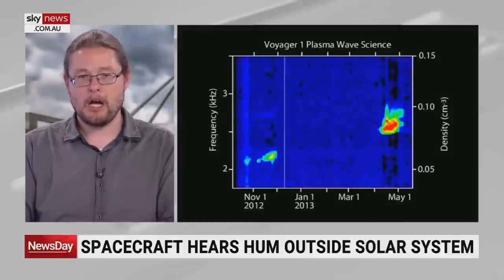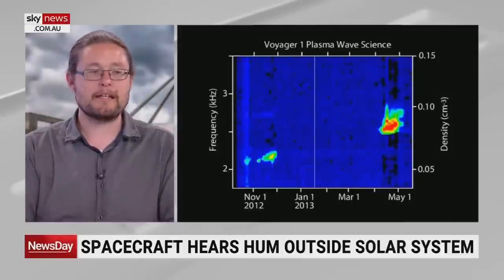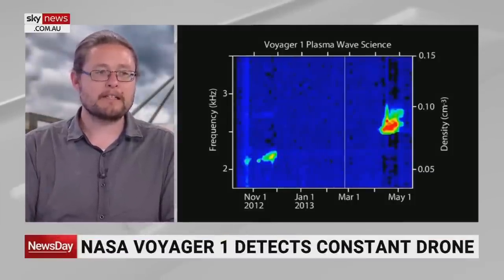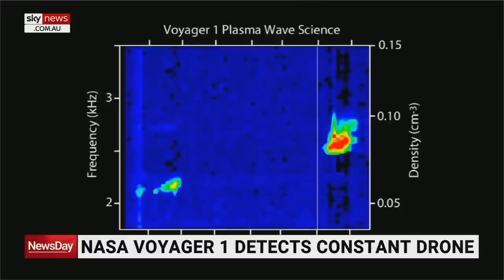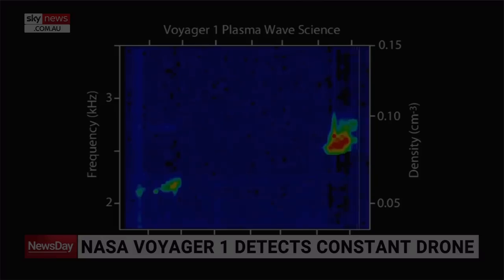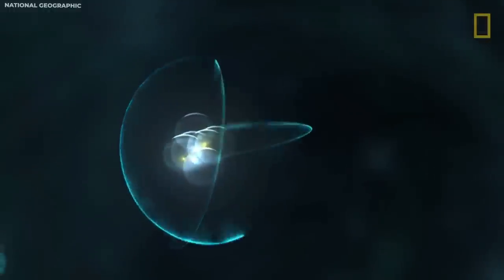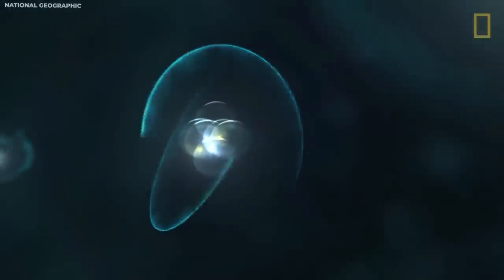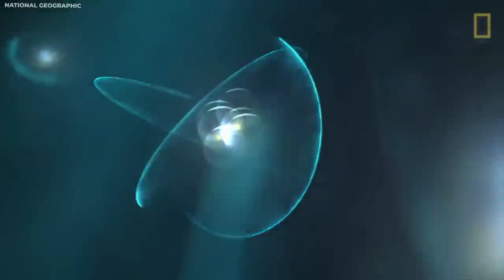They're kind of going into interstellar space, and what they detected a few times is they detected these bulks or waves of plasma. These radio waves were later attributed to six significant flares of the Sun, which had occurred about a year prior.